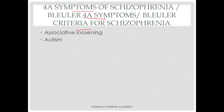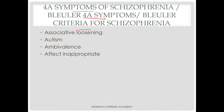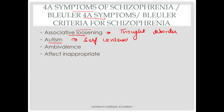Associative loosening refers to thought disorder — the patient will have a type of thought disorder. Autism means self-centered; the individual remains lost in their own world.